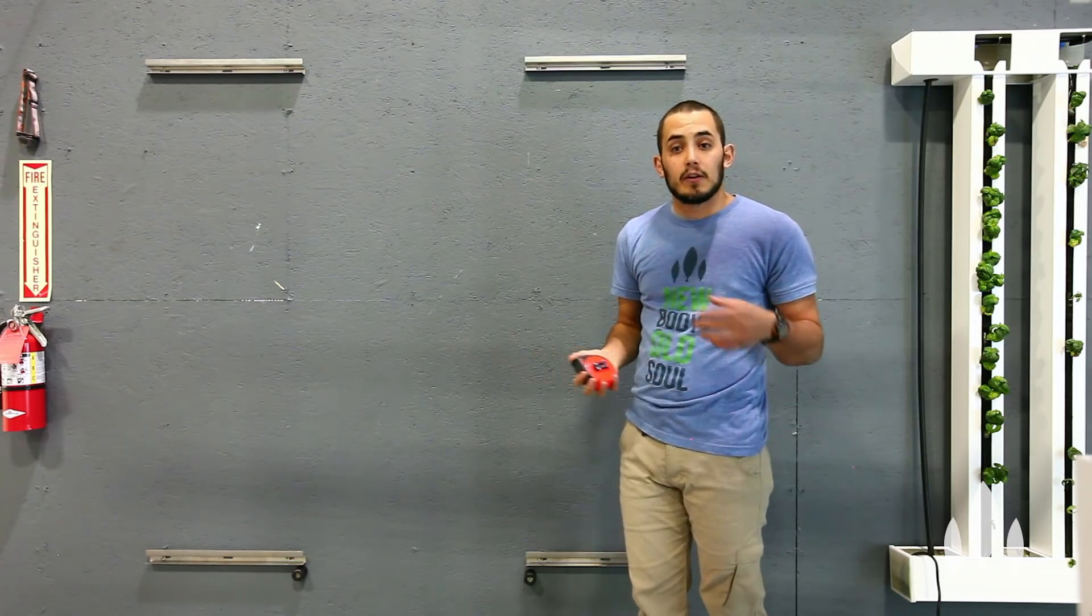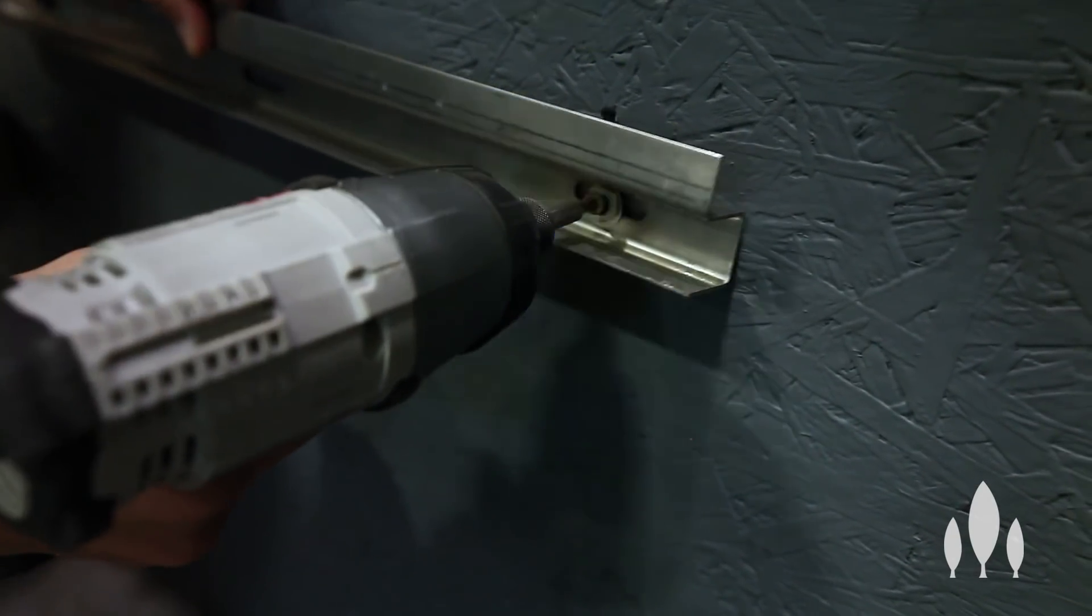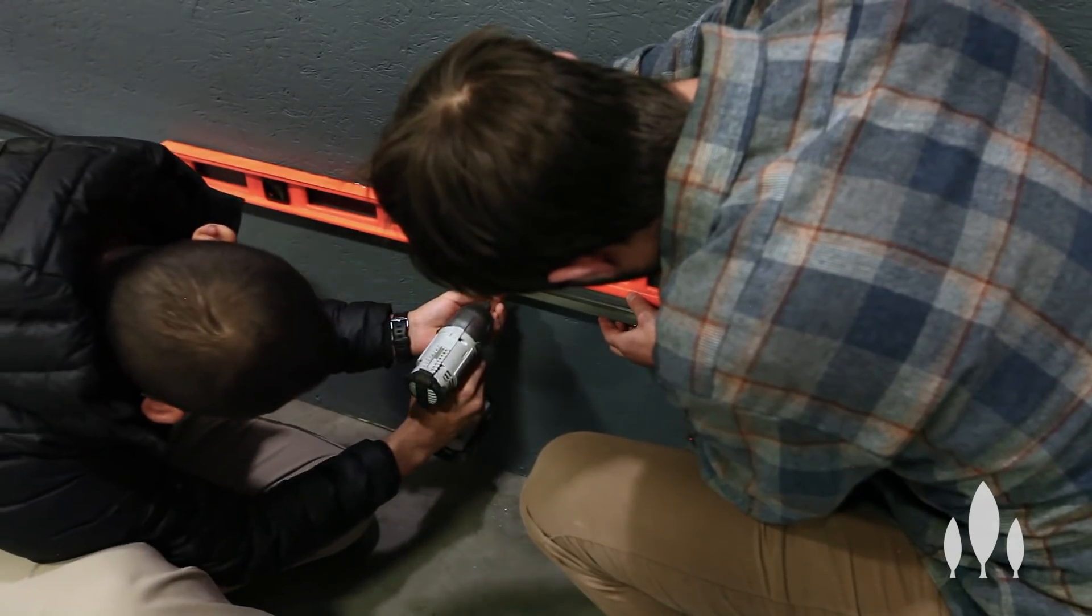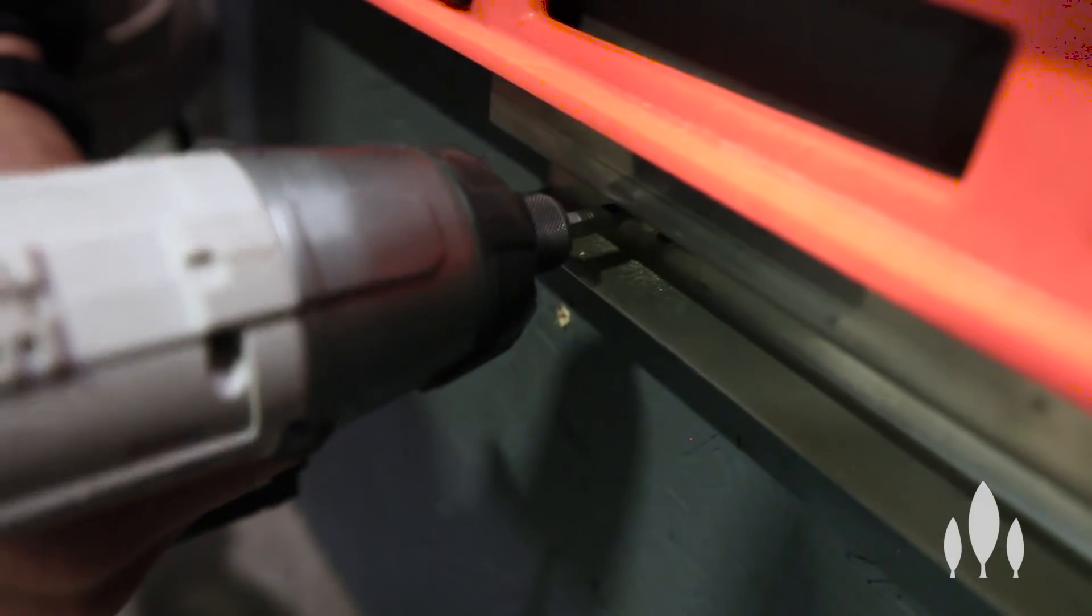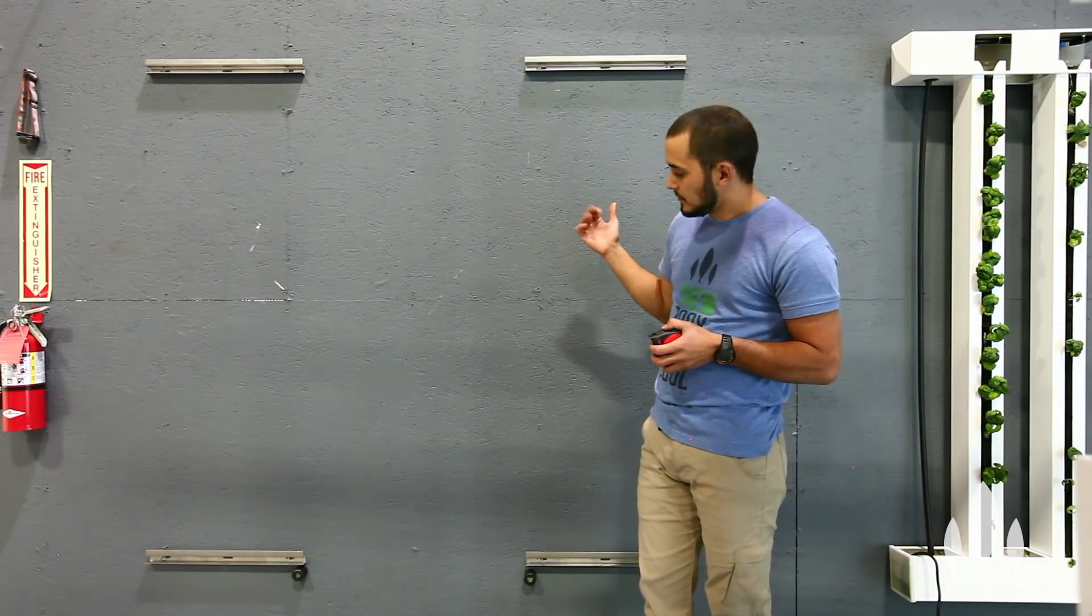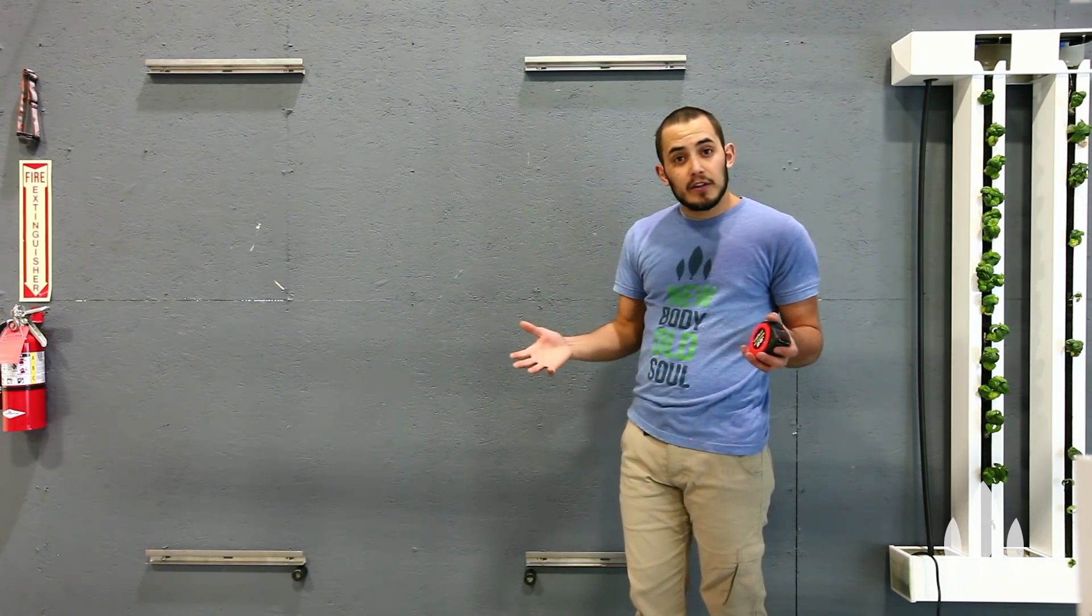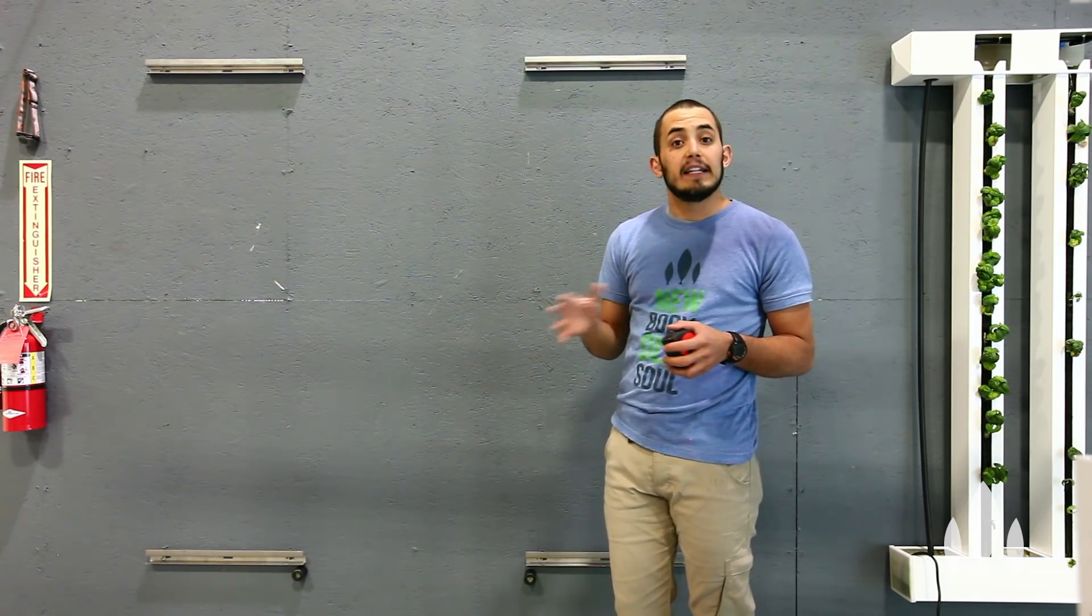And again, I use the same procedure. One screw in, level that channel out. And then the second screw goes in. I keep my bottom channels squared up with my upper channels. You don't have to as long as that gutter clip rests completely on the wall channel.